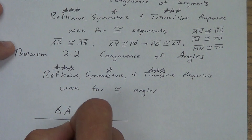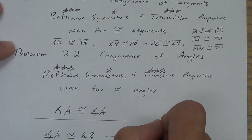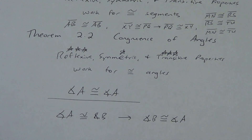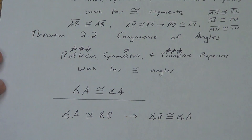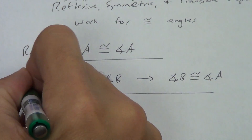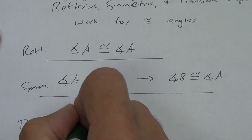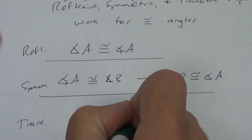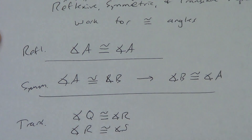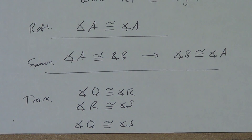Symmetric: angle A is congruent to angle B — we can switch it, so angle B is congruent to angle A. That's symmetric. And then finally transitive — same idea, you can skip the middle. Transitive: angle Q is congruent to angle R, angle R is congruent to angle S — skip the middle, skip the R's — angle Q is congruent to angle S. Those are your basic concepts. Now let's apply them.